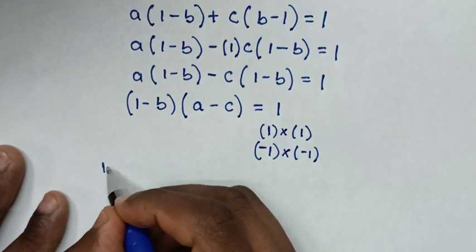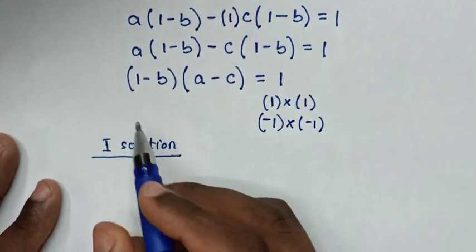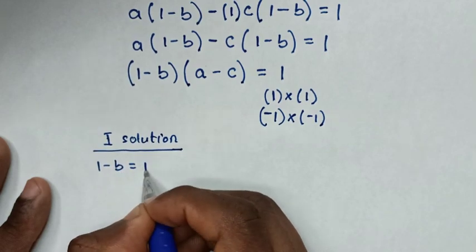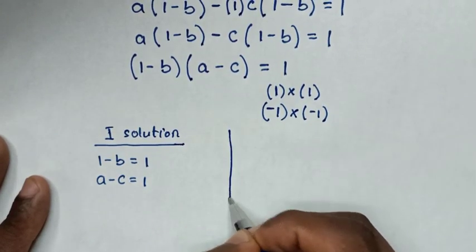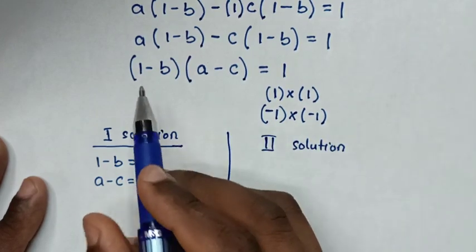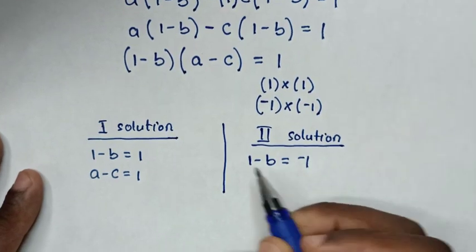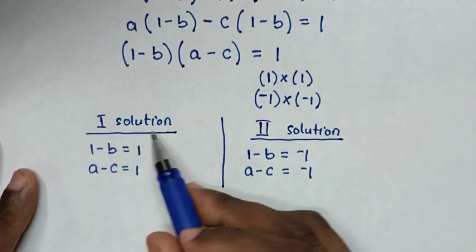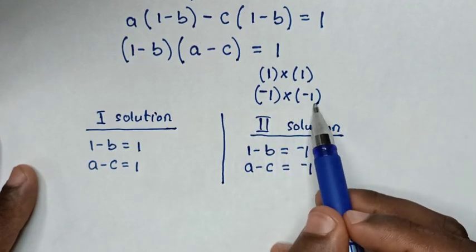In the first solution, the equations are: 1 minus B equals 1, and A minus C equals 1. In the second solution, the equations are: 1 minus B equals negative 1, and A minus C equals negative 1.